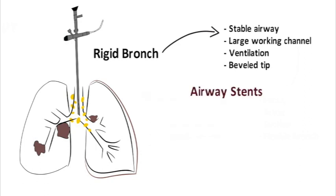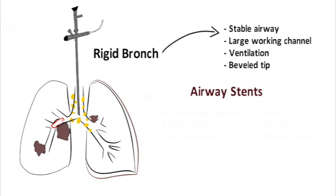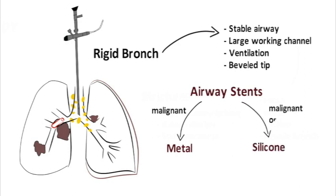Airway stents are designed to maintain airway patency, often in the setting of malignant airway obstruction, and for recurrent benign central airway stenosis. Airway stents come in a variety of forms and materials. Self-expanding metal stents can be placed with a flexible or rigid bronchoscope, and are commonly used in malignant airways disease to oppose external compressive forces and tumor encroachment into the airway. Silicone stents can be used in benign or malignant disease, but require placement and removal with a rigid bronchoscope. Self-expanding metal stents, either covered or uncovered, should only be used in benign conditions if silicone stenting is not feasible.